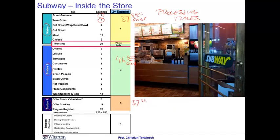Throughout this course, the words activity time and processing time are used interchangeably — they are one and the same thing. I want to wave my hand a bit around the toasting activity, keeping in mind that toasting doesn't require direct hands-on work by a worker but is automated through a toaster. If there were a limited amount of toasting capacity, that would be something we would consider, but for now we'll set that aside.